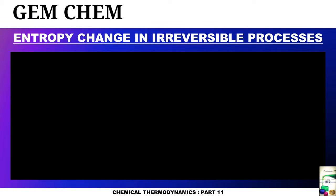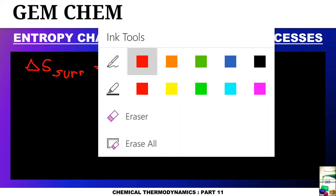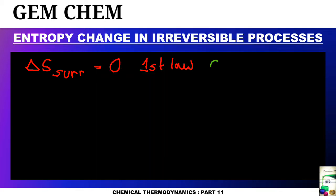To derive entropy change for irreversible processes, we know that delta S surrounding will always be equal to zero, as the process is irreversible with respect to the system but reversible with respect to the surroundings. From the first law of thermodynamics, for any irreversible process we can write: q irreversible plus work irreversible equals delta U.